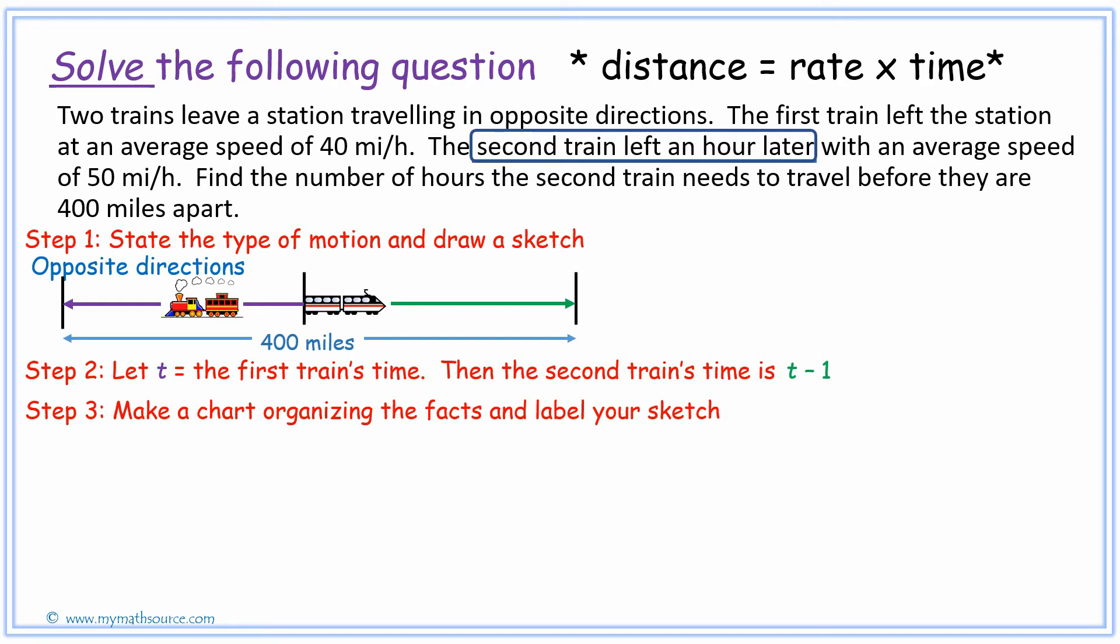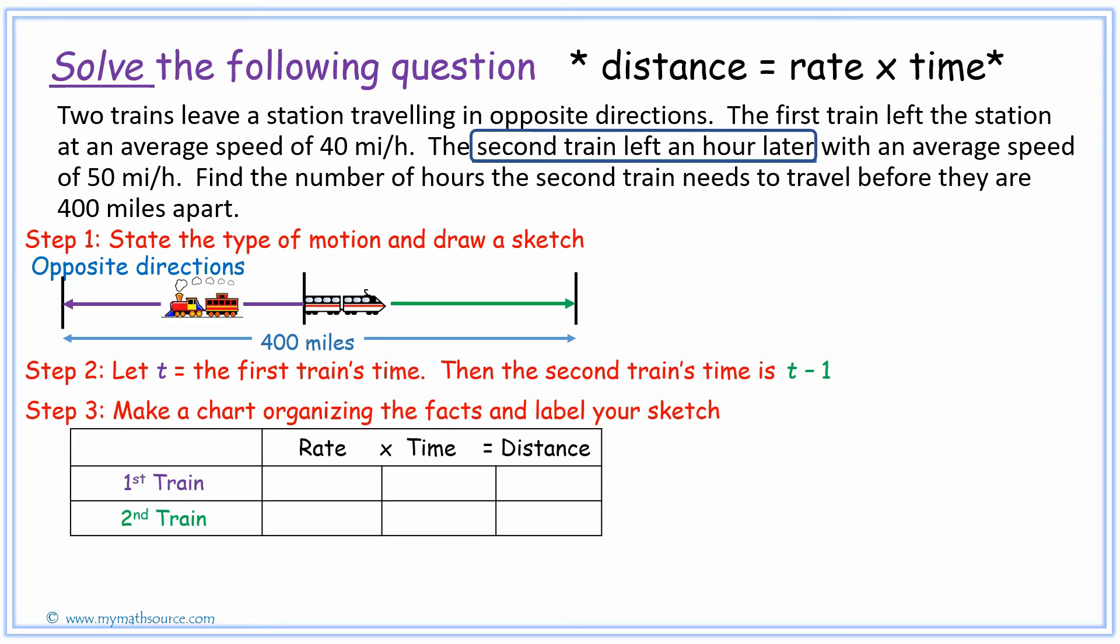Now that we have our two variables, we want to make our chart that will organize the facts and appropriately label our sketch. We make our table, our rate times time equals distance table. We have our first and second train. The first train is given—it travels 40 miles per hour, so we put that in there. We have our time for our first train to be t, and so that makes our distance, which is rate multiplied by time, to be 40t.